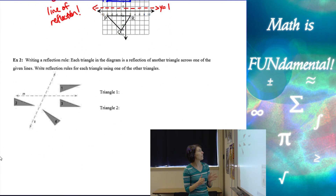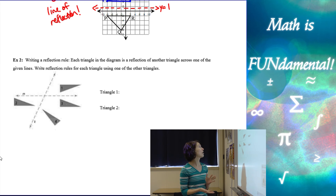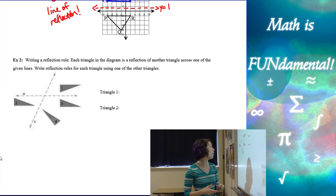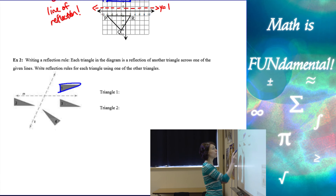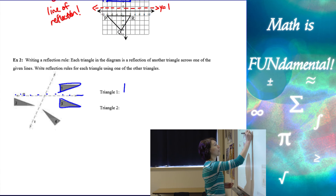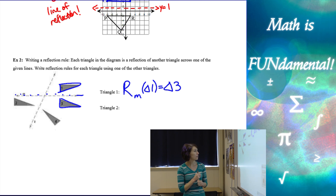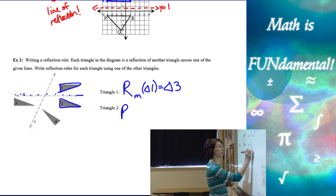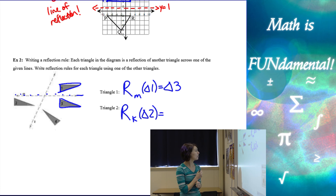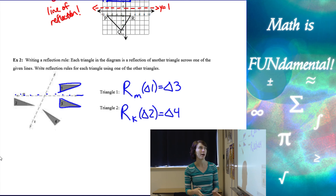Next example: writing a reflection rule, practicing our notation. Each triangle diagram is a reflection of another triangle across one of the lines. Write a reflection rule for triangle one. Triangle one is reflected over line M, so we write: capital R sub M of triangle one equals triangle three. For triangle two, we have a reflection over line K, so capital R sub K of triangle two equals triangle four. These are quick notations, but it's very important that we know how to write them.